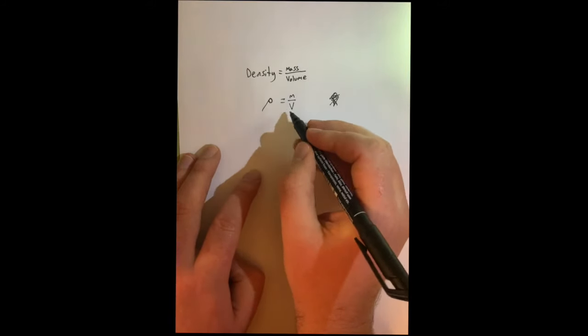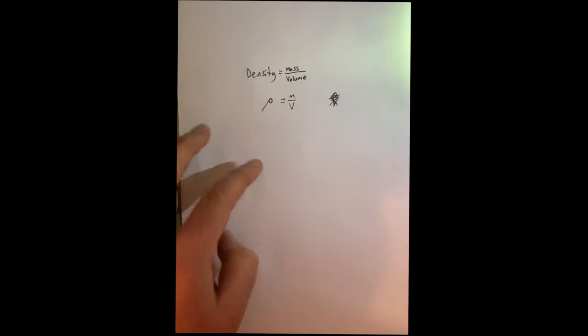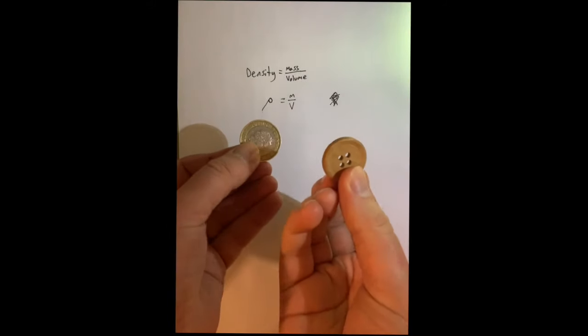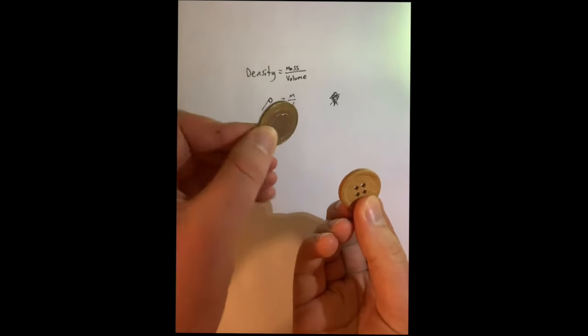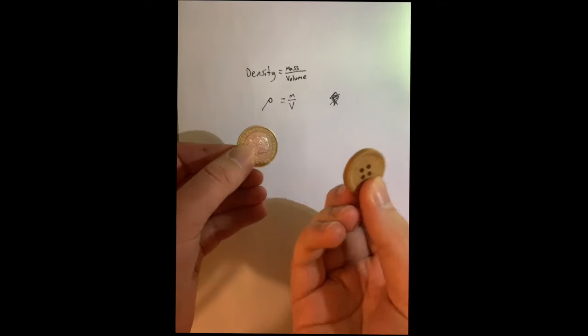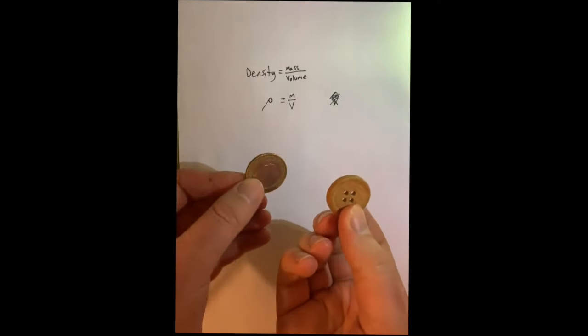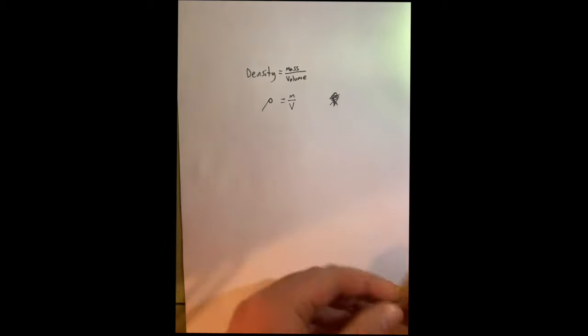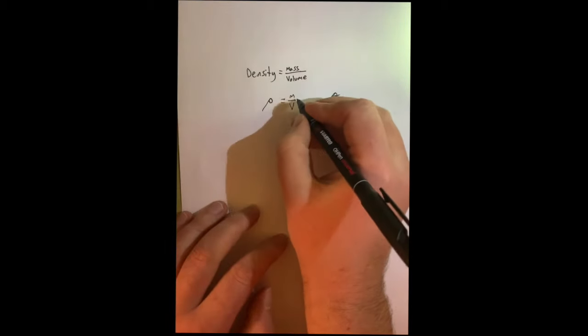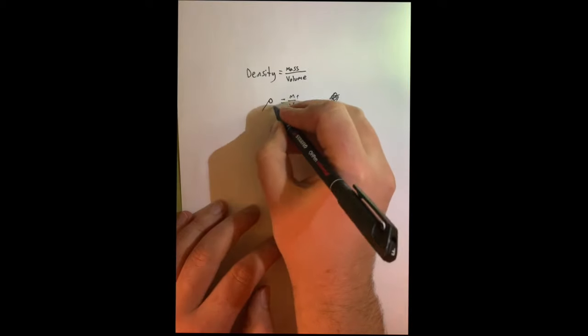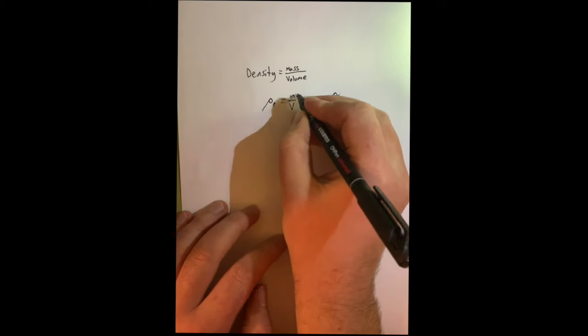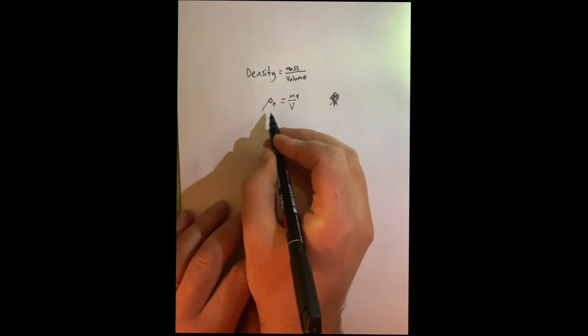And so this formula actually makes sense with what we know about the world already. I've got a coin here, I've got a wooden button, the coin has more mass, it's heavier than the wooden button. We know instinctively the coin's more dense, they're about the same size, so what I've done in terms of the formula is that if I increase the mass, then I've increased the density. And so the coin is the more dense object.